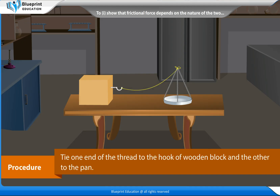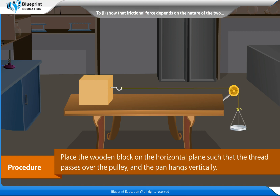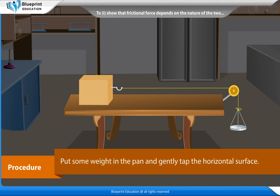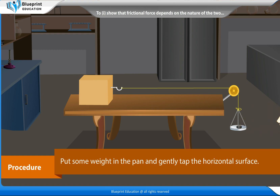Procedure: Tie one end of the thread to the hook of the wooden block and the other end to the pan. Place the wooden block on the horizontal plane such that the thread passes over the pulley and the pan hangs vertically. Put some weight in the pan and gently tap the horizontal surface.